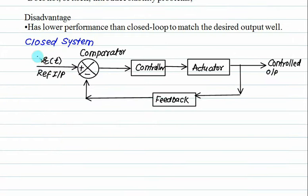In closed systems, R is the reference input, C is the control output, and B is the feedback signal. E is the error signal. The feedback converts your signal for comparison purposes. The comparator's job is to compare the input value and the feedback value.